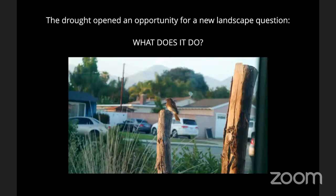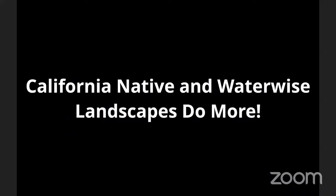This is a picture out the window at my house. You can see a young California native garden growing in. One of the things my landscape does, in addition to being beautiful, is provide habitat for native pollinators, butterflies, and birds. Here you can see a black Phoebe that has just caught a little insect — we're providing habitat for birds. In turn, those birds hunting for seeds and insects provide great entertainment for myself, my partner Kira, and our cats. California native and waterwise landscapes do more than the landscapes they would be replacing, and that's likely true for regionally appropriate landscape types wherever you are.